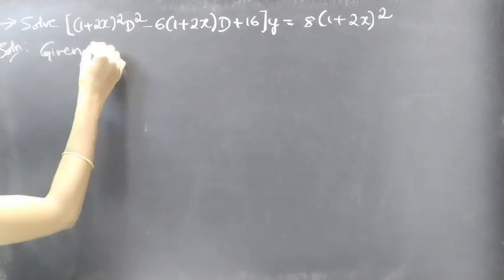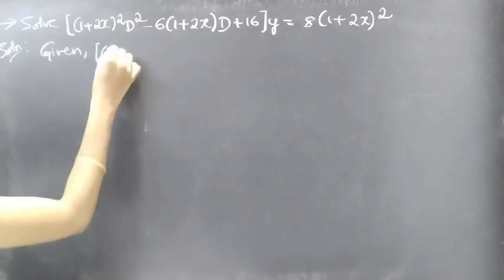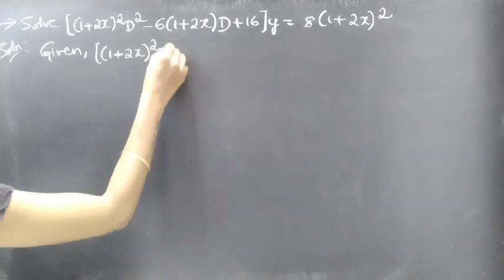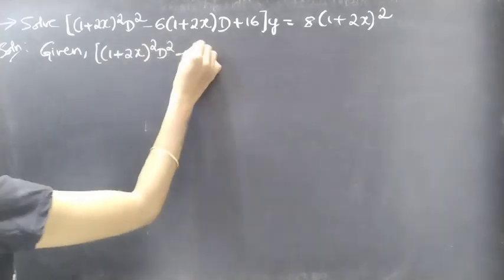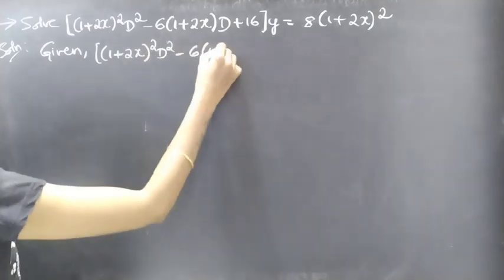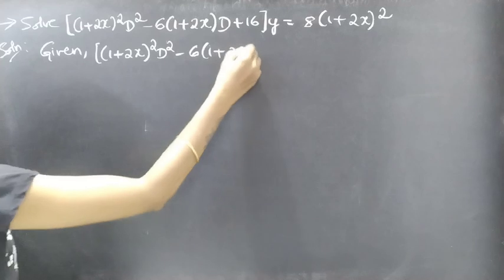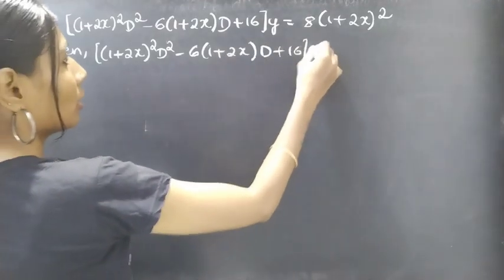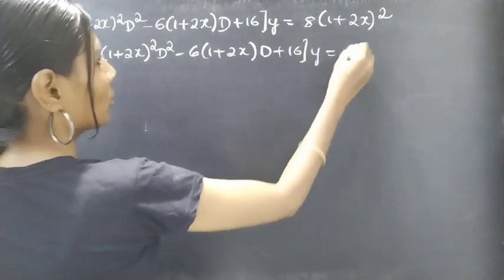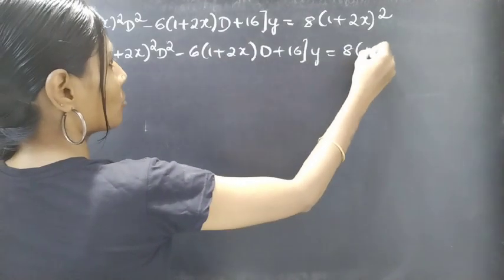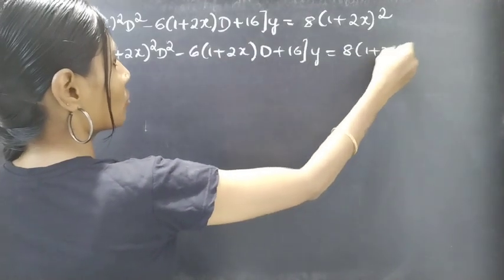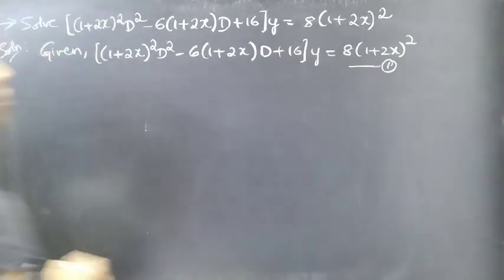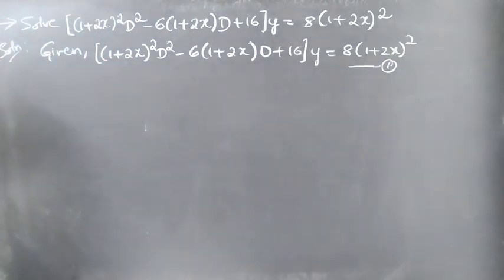The given differential equation is: (1+2x)² D² minus 6(1+2x)D plus 16 into y equal to 8(1+2x)². We label this as equation number 1, and we will solve it as a Legendre's equation.